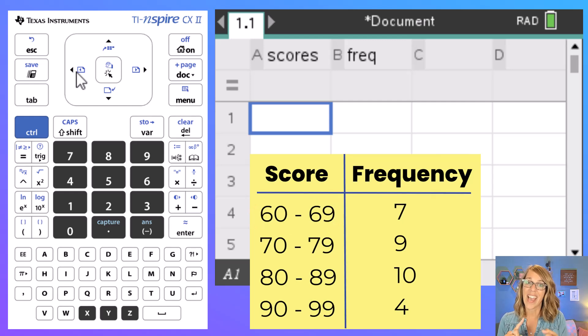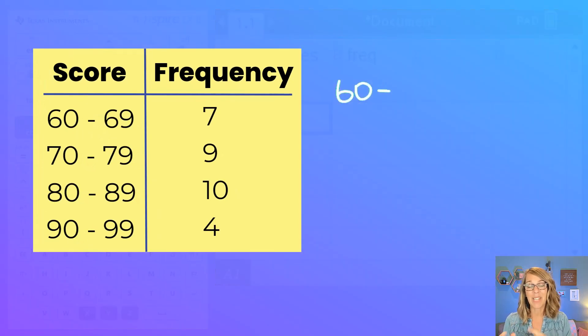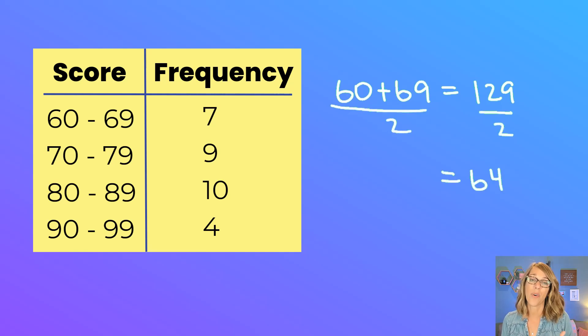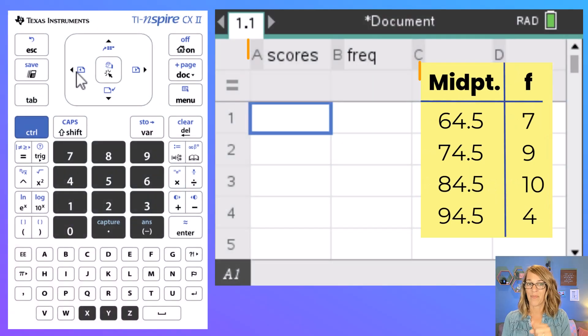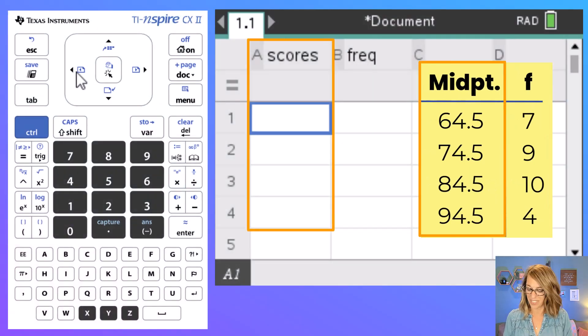To find that midpoint I'm going to add those two limits so 60 plus 69 which is 129 and then I'll divide that by 2 to get 64.5. Doing that for each of these classes gives me the midpoints and the values that I'm going to type into my first column. Let's go ahead and type these in.